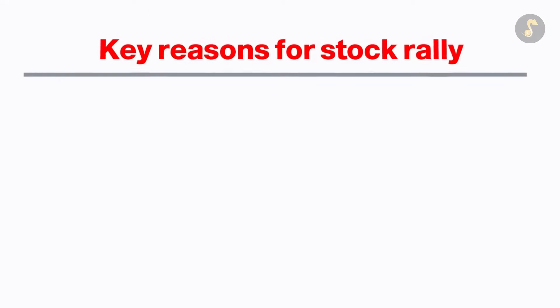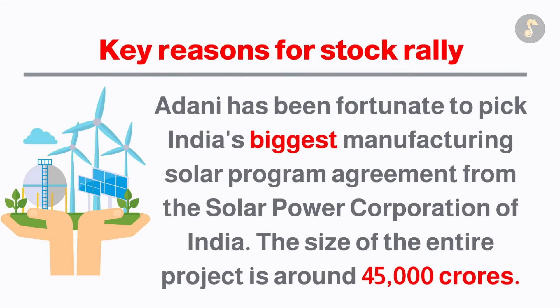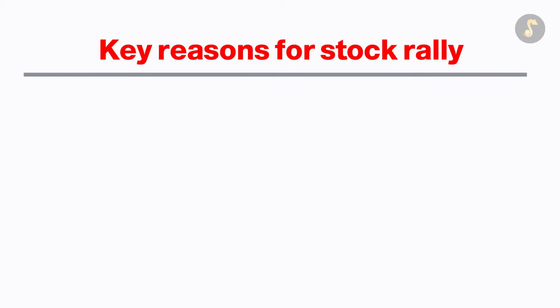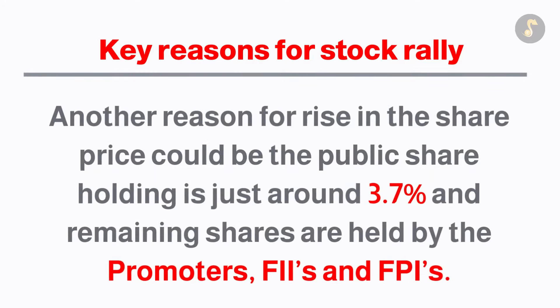Two major reasons for the stock rally are: number one, Adani has been fortunate to pick India's biggest manufacturing solar program agreement from the Solar Power Corporation of India — the size of the entire project is around 45,000 crores. Another reason for the rise in share prices could be that the public shareholding is just around 3.7%, with remaining shares held by the promoters, FIIs, and FPIs.